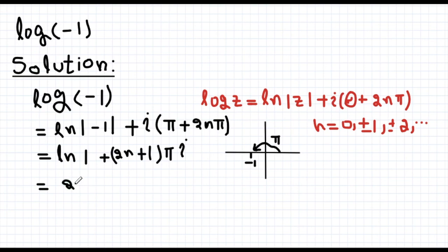So overall we get the answer 2n plus 1 pi iota. So this is a multi-valued answer for the log of minus 1. Thanks for watching.